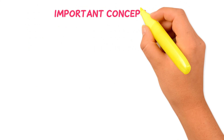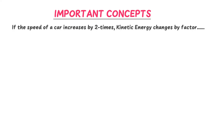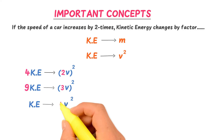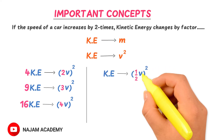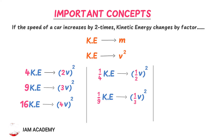Now for the most important concept: kinetic energy depends on the square of velocity. If speed increases by 2 times, kinetic energy increases by 4 times. If speed increases by 3 times, kinetic energy increases by 9 times. If speed increases by 4 times, kinetic energy increases by 16 times. Conversely, if speed decreases by 2 times, kinetic energy decreases to 1/4. If speed decreases by 3 times, kinetic energy decreases to 1/9, and so on.